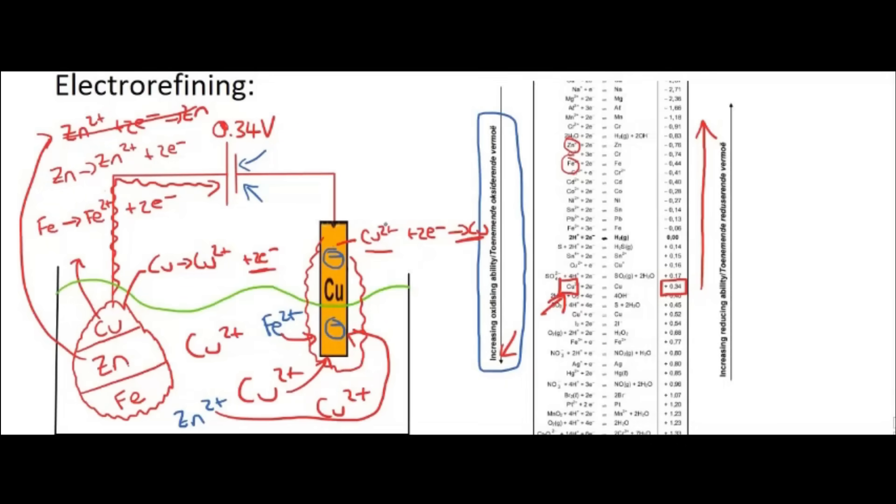And then on the other side, the Fe 2 plus, the Zn 2 plus, and the Cu 2 plus, they are all going to compete. But luckily, Cu 2 plus will win because it's lower down on the left-hand side of the table, so it's the best oxidizing agent.